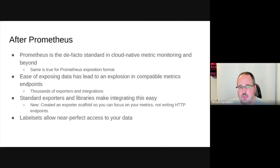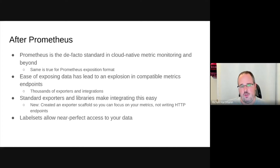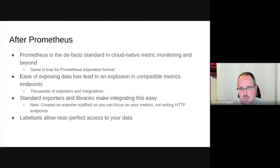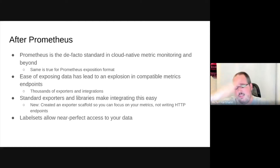Let's look at the world after Prometheus. Prometheus, as of today, is the de facto standard in cloud-native metric monitoring and way beyond. By extension, the same is true for the Prometheus exposition format. The ease of exporting this data has led to an explosion in compatible metric endpoints — thousands of exporters and integrations that people wrote just because it was so simple and powerful. Label sets allow you to create an n-dimensional matrix of how you look at your data, slicing and dicing by customer, deployment, region, or version as needed.